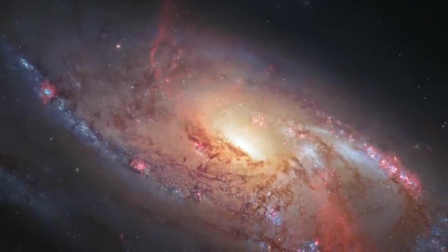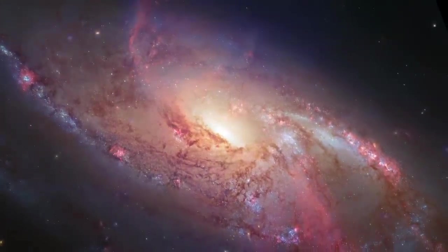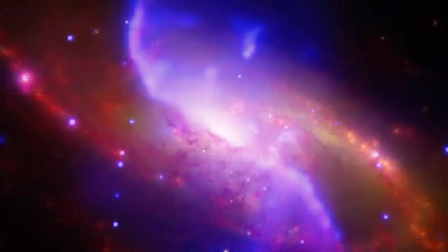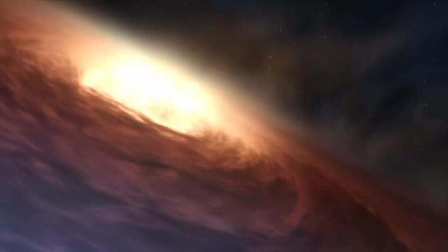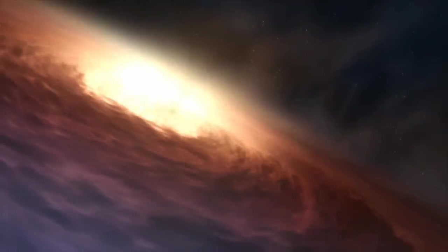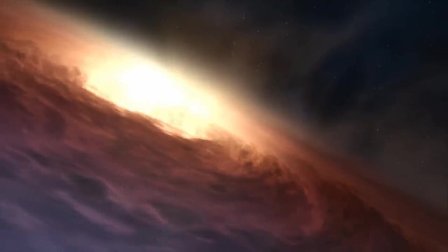While these ghostly extra arms have been known about for decades, astronomers were unsure of how they formed. Until recently. Yet again, the culprit is Messier 106's supermassive black hole.